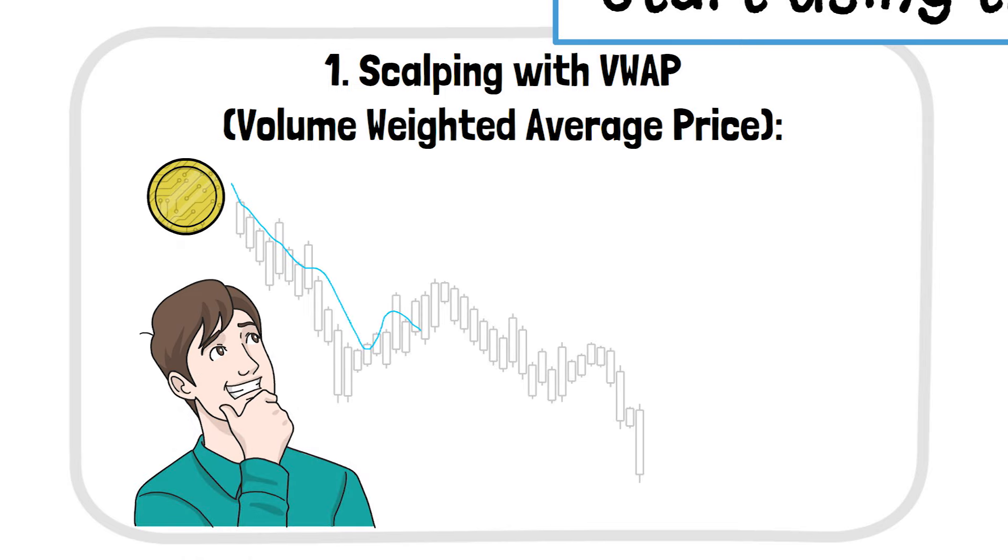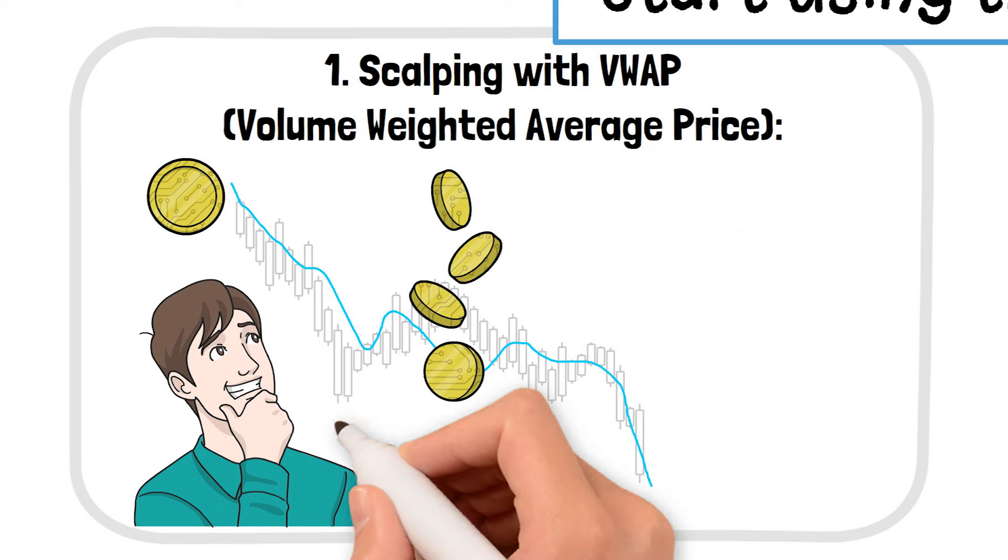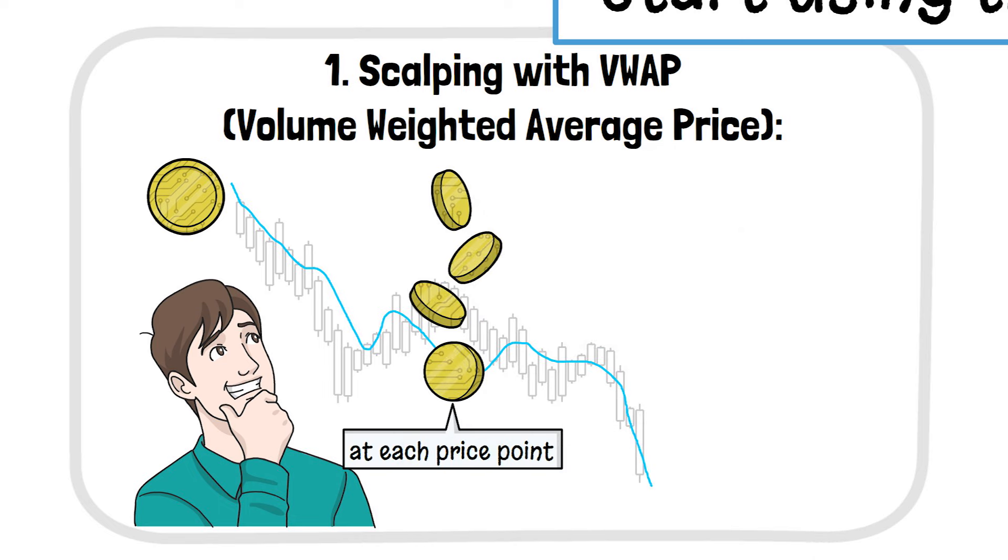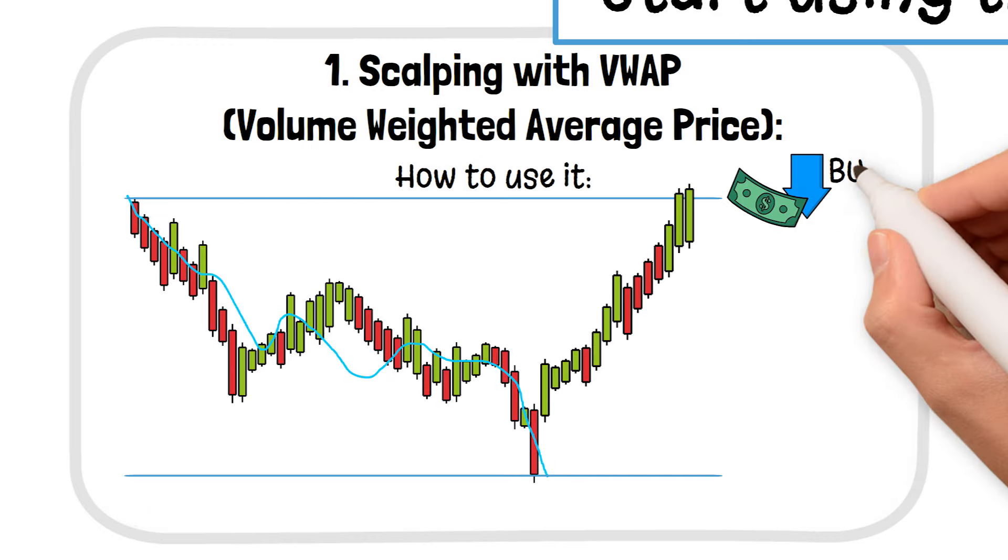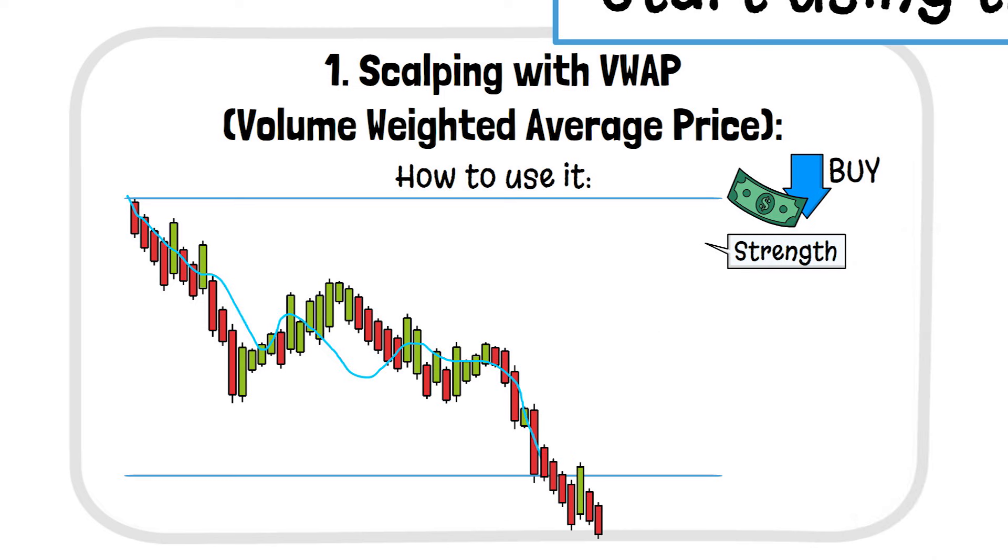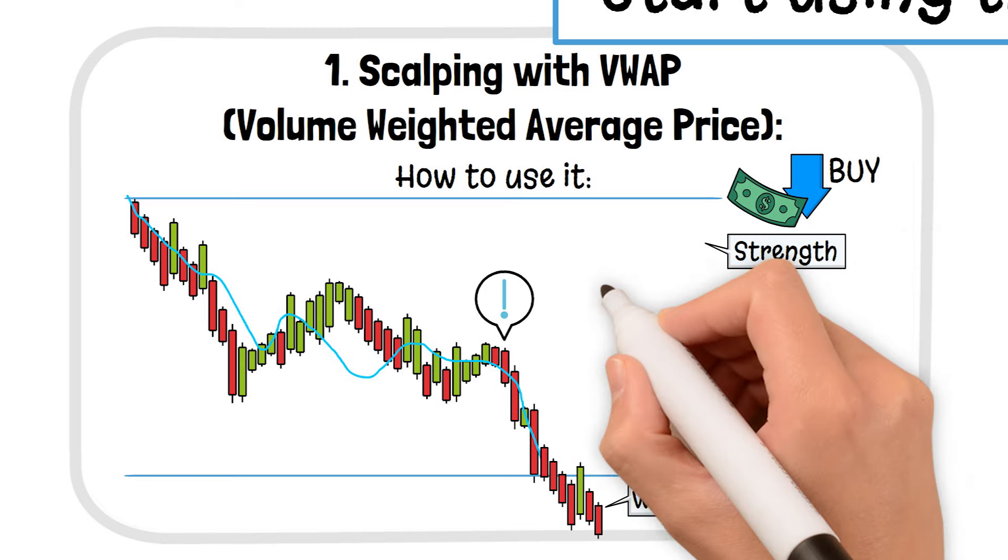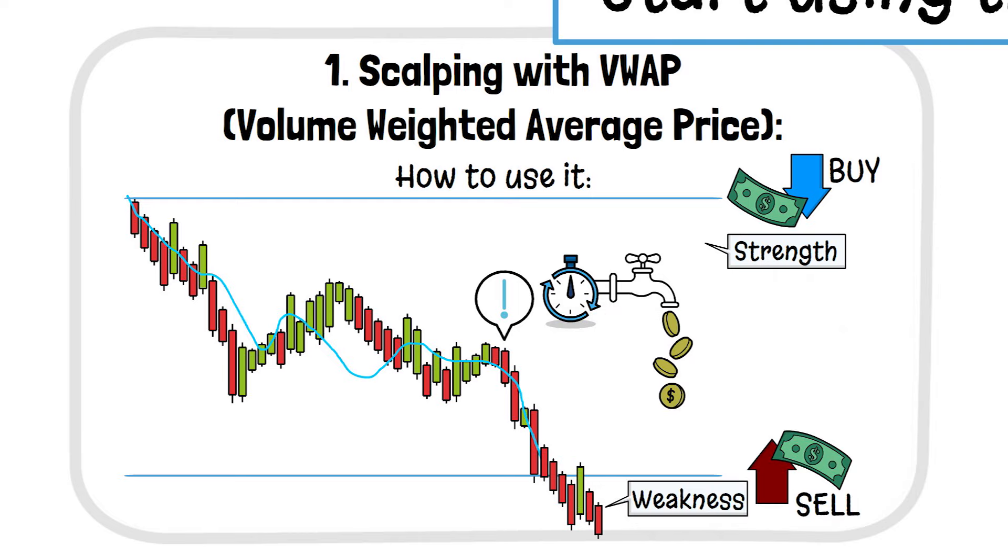It shows the average price of an asset, but it's weighted based on how much volume is traded at each price point. Think of it as a tool to tell you whether the current price is fair or not. If the price is above the VWAP, it's a signal to buy because it shows strength. If it's below, it's a signal to sell because it shows weakness. It's great for spotting when to jump into a trade for quick gains.